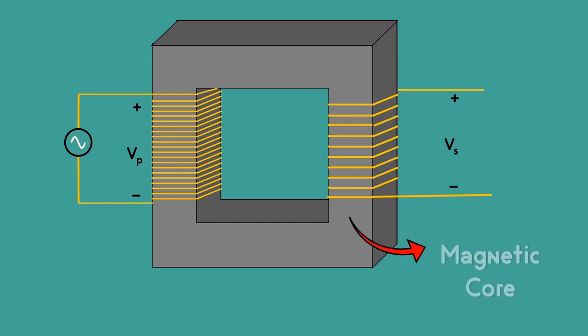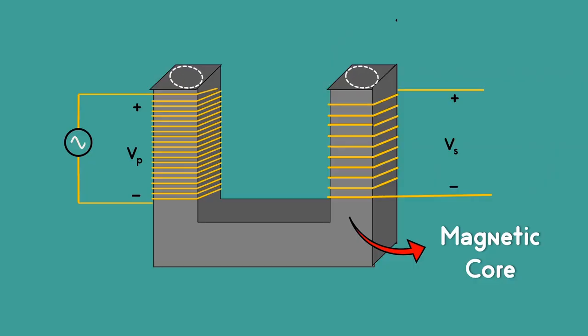Even though the presence of magnetic core increases the efficiency, there is still a lot to improve. One of them is eddy currents. Eddy current is the circulating current that flows in the core of the transformer.